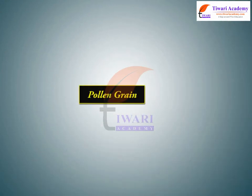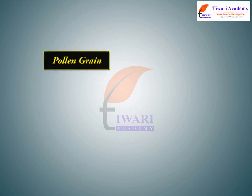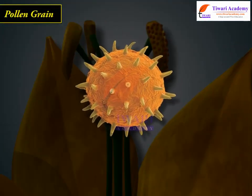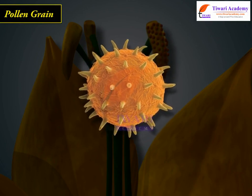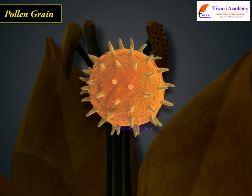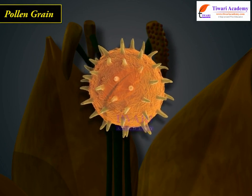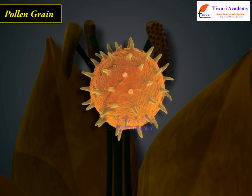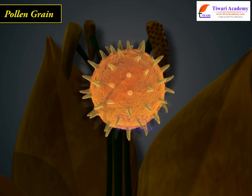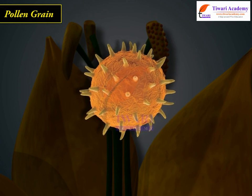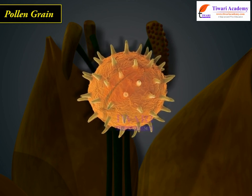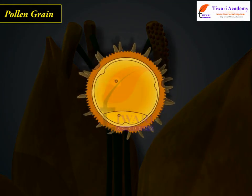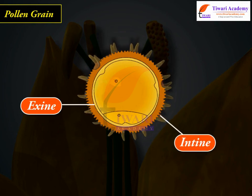Pollen Grain: The microspores are haploid, uninucleate, minute spores produced in large numbers as a result of meiosis in microspore mother cells inside the microsporangia. The pollen grains represent the male gametophytes. The pollen grain has a two-layered wall: exine and intine.